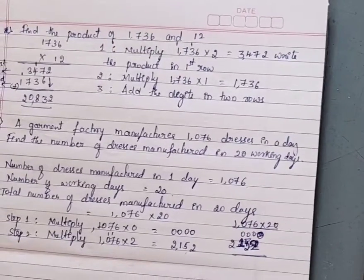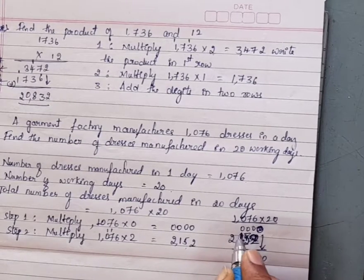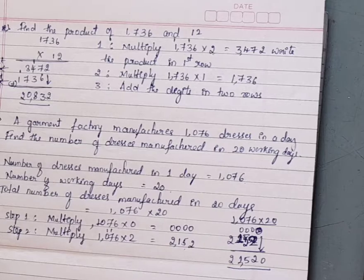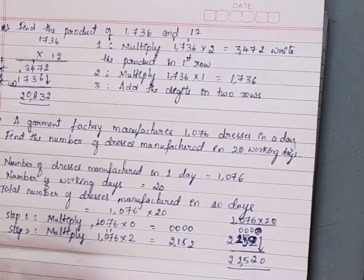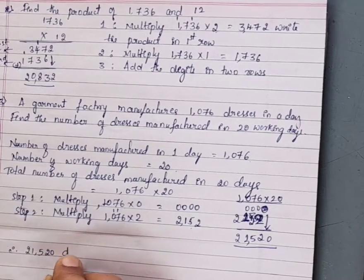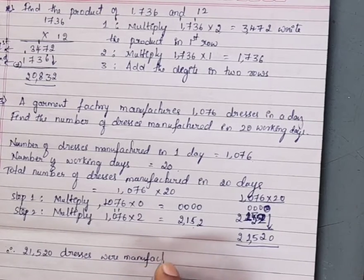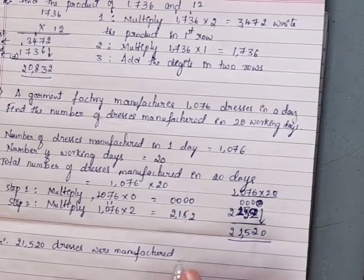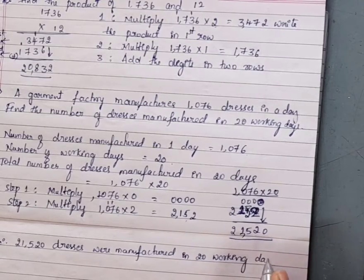Now add the digits in both rows. 0 plus 2 = 2, 0 plus 5 = 5, 1 plus 0 = 1, 2. The product is 21,520. Therefore 21,520 dresses were manufactured in 20 working days.